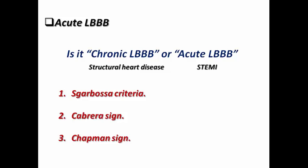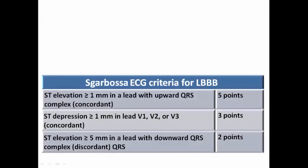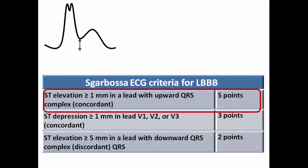The first criterion is the Sgarbossa criteria, the most important because we can apply it in most situations. The Sgarbossa criteria depend on three sub-criteria. The first is ST-elevation of more than or equal to one millimeter in a lead with an upward QRS complex — this is called concordant ST-elevation, meaning the ST-elevation is concordant with the QRS polarity. For example, V5 and V6 show positive QRS complexes in left bundle branch block, so ST-elevation of ≥1mm in V5 or V6 is concordant and scores five points — the most important criterion.